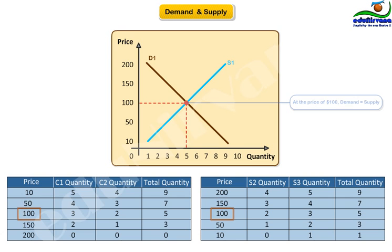It means that at $100 price, the quantity supplied is equal to the quantity demanded.